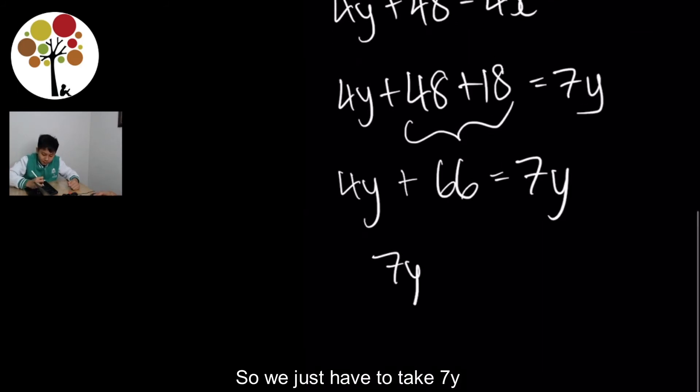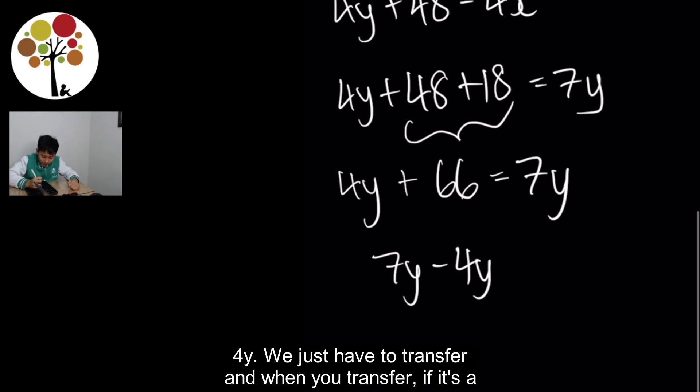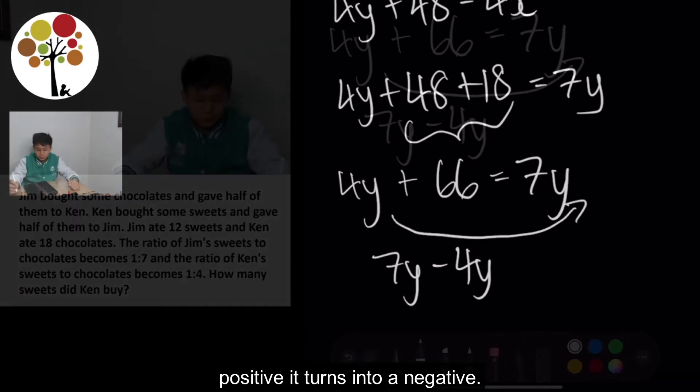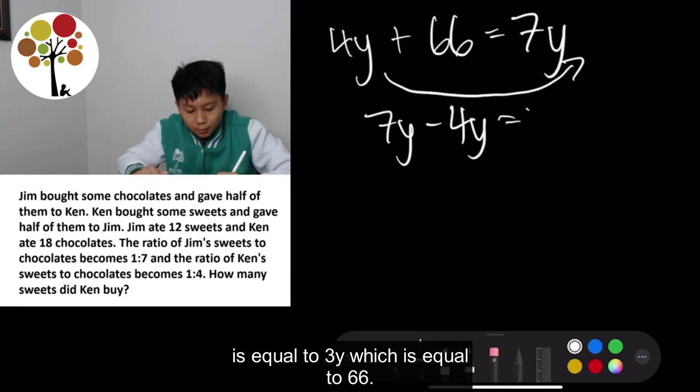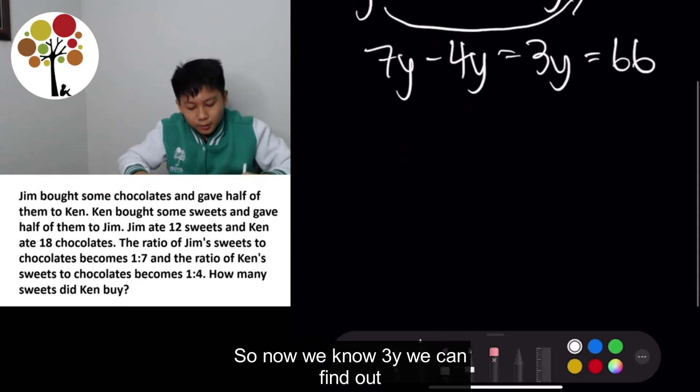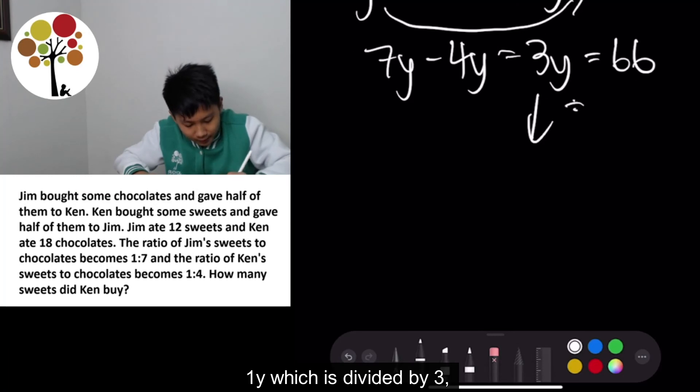So we just have to take 7Y minus 4Y. We just have to transfer. And when you transfer, if it's a positive, it turns to a negative. So 7Y minus 4Y is equal to 3Y which is equal to 66. So now we know 3Y. We can find out 1Y which is divided by 3 which is equal to 22.